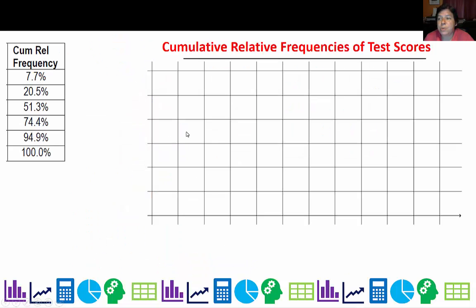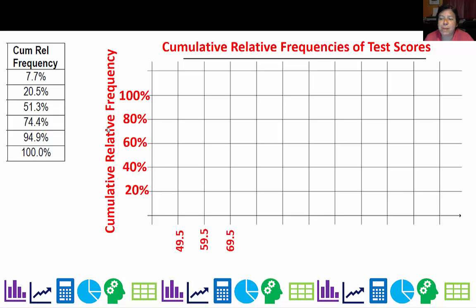So here we have cumulative relative frequencies of test scores. I've labeled my axes and the bottom axes at the end here. Put my dot at 0. Then remember 7.7, so your graph is always going to start at 0. So there's the 7.7, 20.5, halfway would be about here. 74.4 is going to be about there, and then 94.9, that's almost to 100, and then 100%. Then connect them with segments. And there is your ogive. And don't forget, label both your axes.